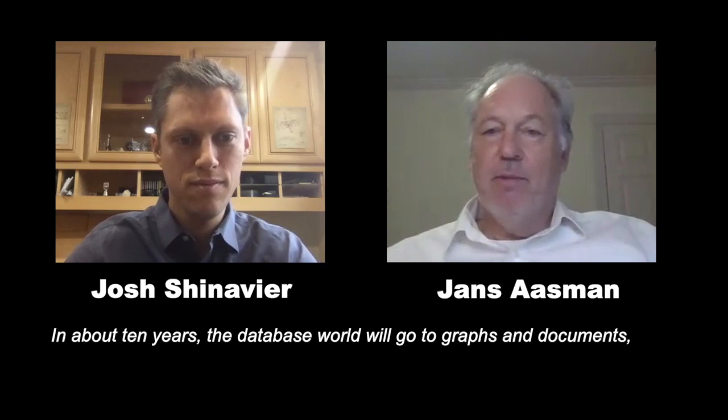I was recently talking to a Gartner analyst, and he said that internally in Gartner, there's a large group of analysts who think that in about 10 years, the database world will go to graphs and documents, because graphs are the most flexible way of representing data. You can take a graph and model a relational database, a document database, a key-value store — you can always use a graph as the core mechanism. It's the most granular, flexible system to express data.